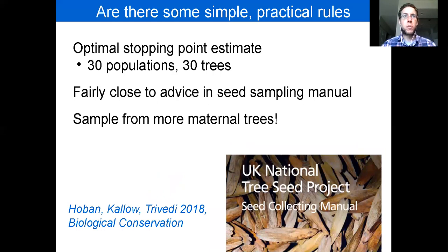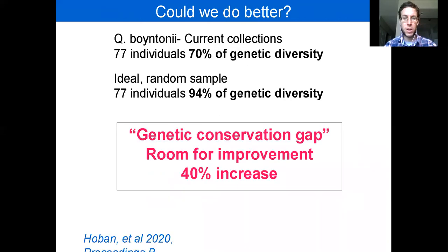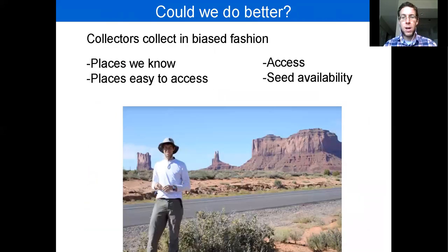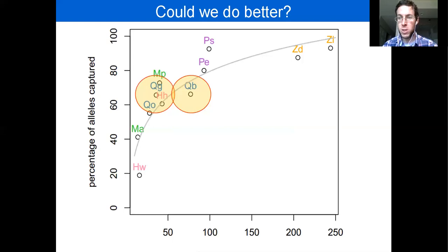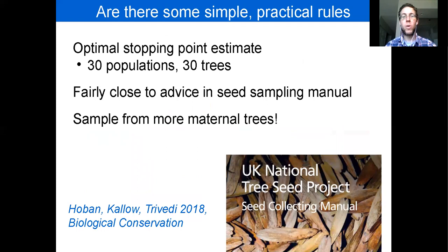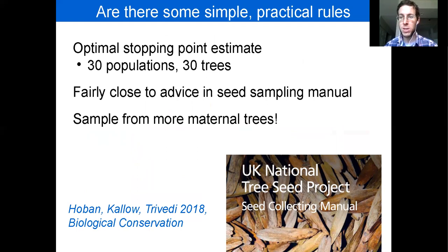If you think back to that curve I showed — the accumulation of genetic diversity is a diminishing returns curve, for rare species and common species alike. At some point this curve starts to flatten and you've gotten most of the genetic diversity. We wanted to look at what I call an optimal stopping point, where we're not getting much more genetic diversity per unit effort. For this species, we estimated that at about 30 populations, and within populations 30 trees, along with as much seed as needed from those trees for restoration or experimentation.